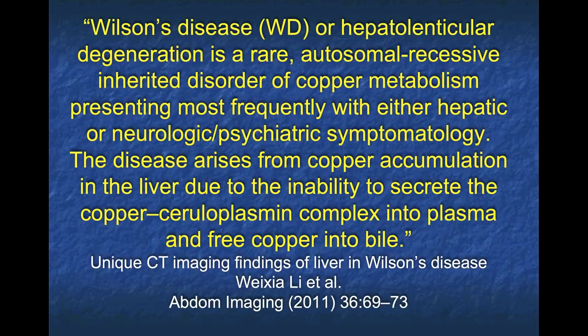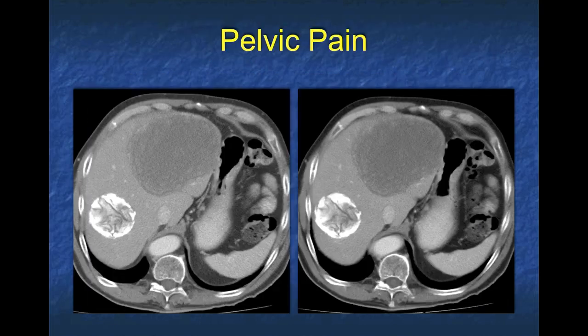Wilson's disease presents with either hepatic or neurologic symptomatology. It really looks like cirrhosis, but it's that later phase showing the geographic pattern that lets you make the diagnosis. A really great case.